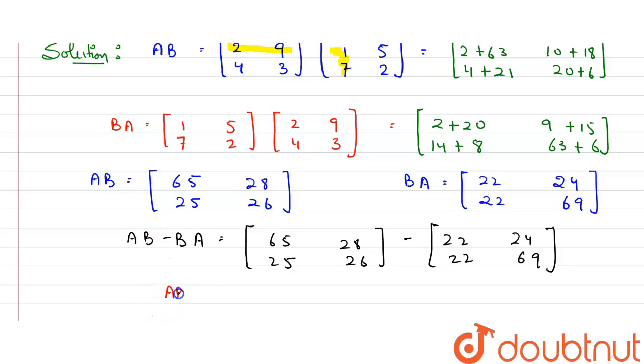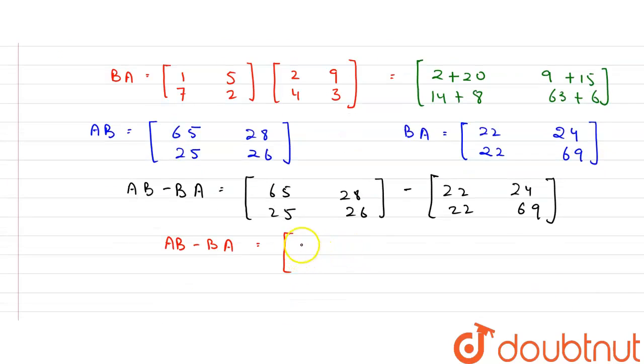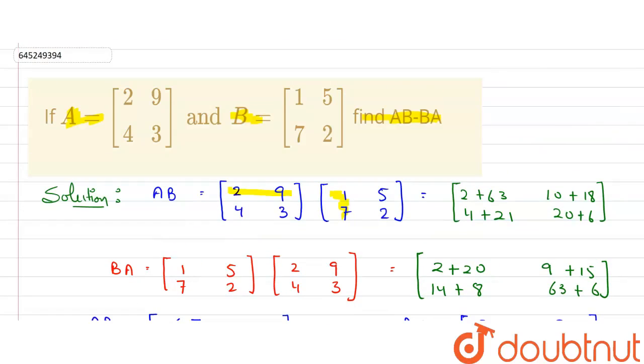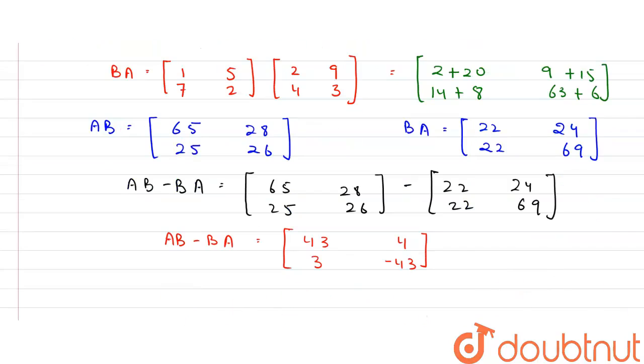So AB minus BA is our final answer. That is equals to 65 minus 22, that will be equals to 43. 28 minus 24, 4. 25 minus 22, it will be 3. 26 minus 69, it will be minus 43. So this is AB minus BA, the matrix that we need to calculate in our question. This is our final answer. Thank you.